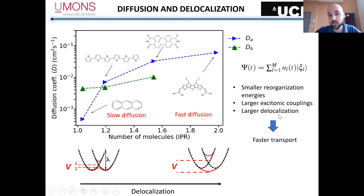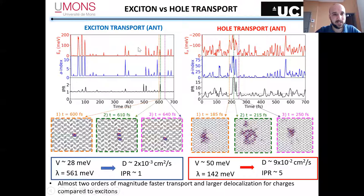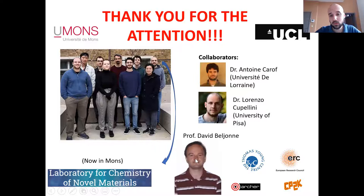Bottom line is that smaller reorganization energy and larger excitonic couplings give larger delocalization and faster transport. You can compare exciton transport and charge transport on the same system. For anthracene, the exciton is much more localized because of stronger local exciton-phonon coupling, whereas the charge is more delocalized over five molecules. The diffusion is much faster, almost two orders of magnitude again. I thank the group and David Beljonne for useful discussion. Thank you very much.